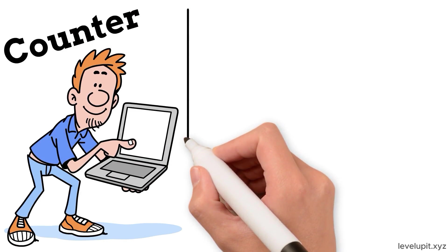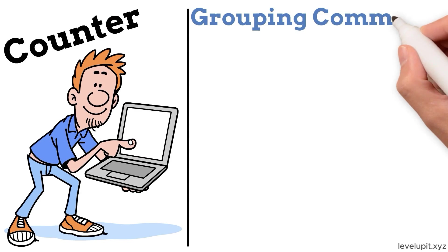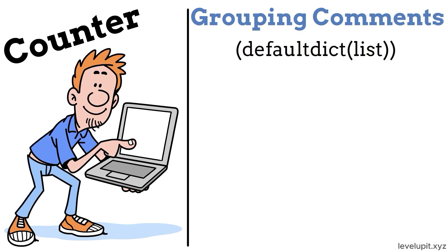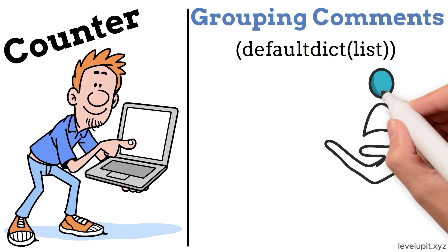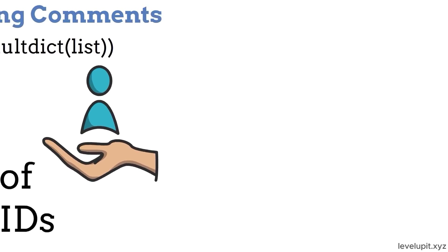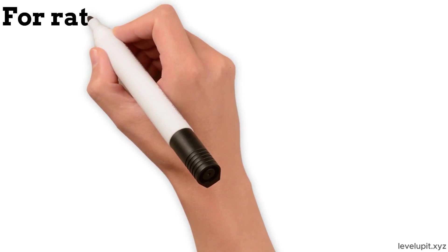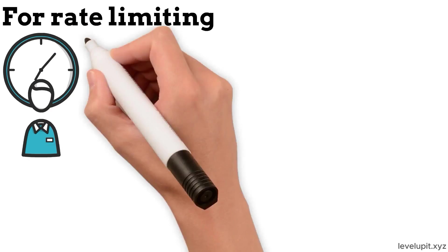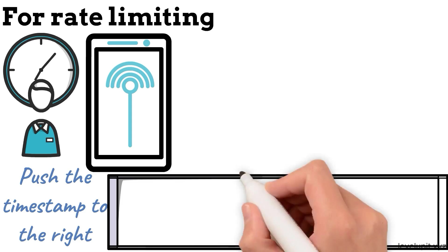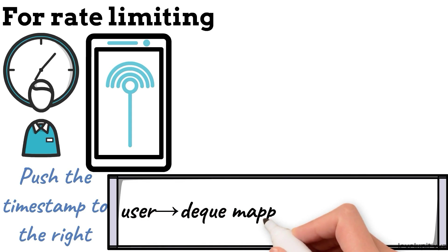If you're analyzing comments and want to find common words or repeated issues, use Counter on the word list to get counts in one step. If you're grouping comments by author for review, defaultdict of list lets the code read 'group by author' without setup code. If you want to make sure the same user isn't processed twice in a cooldown window, a set of user IDs solves it cleanly. For rate limiting, keep a deque of timestamps per user. Each time a new request arrives, push the timestamp to the right and remove old timestamps from the left that fall outside the time window.